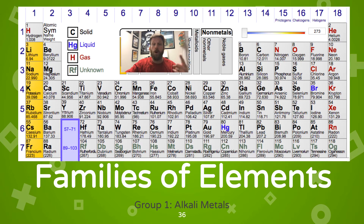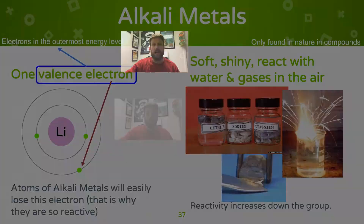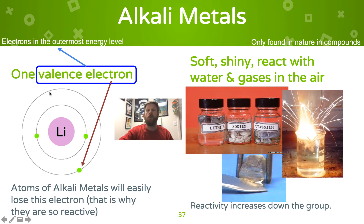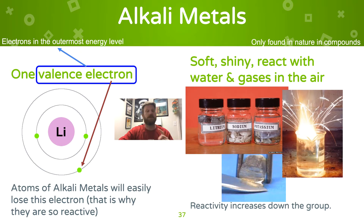We'll start with group 1, the alkali metals. The alkali metals all have one valence electron. Valence electrons are electrons in the outermost orbital — the outermost energy level. They're the only ones we care about in chemistry. All the elements in group 1 have one valence electron, and that's what makes them extremely reactive.